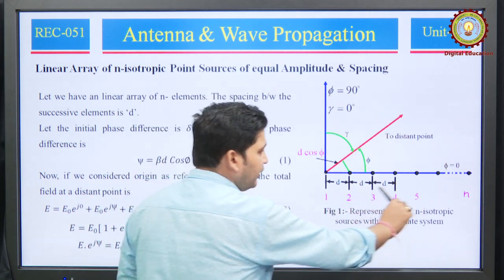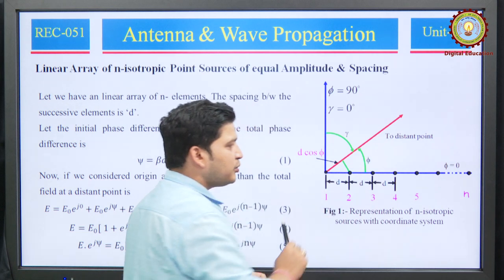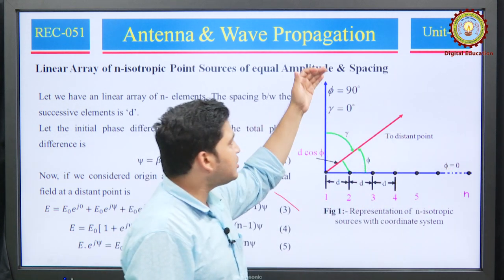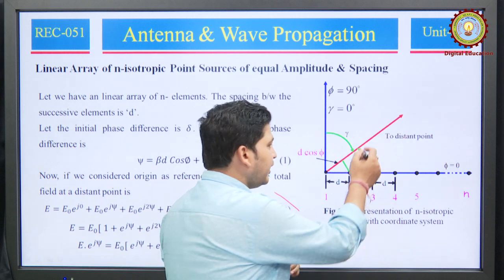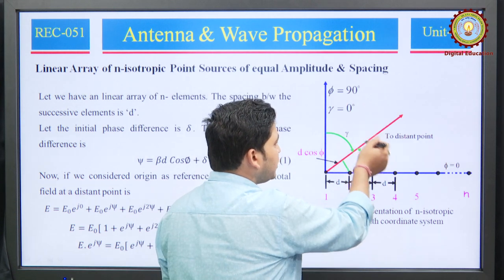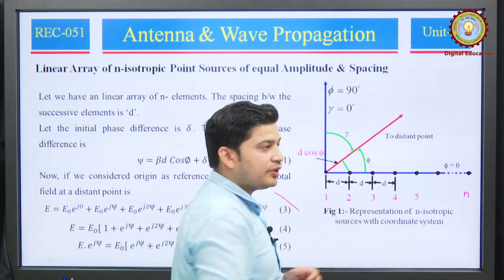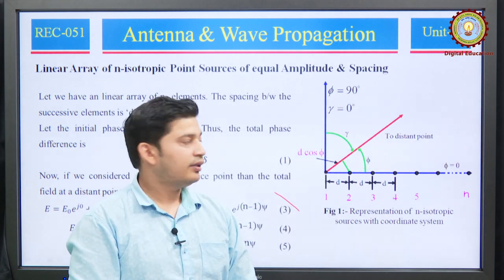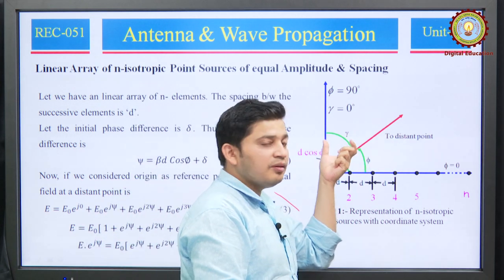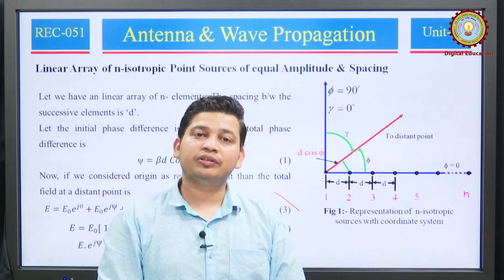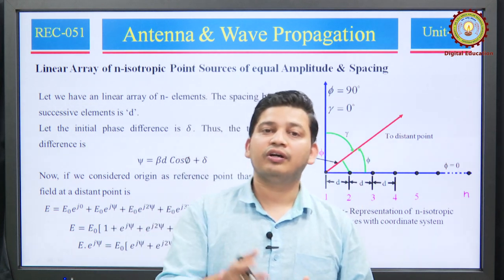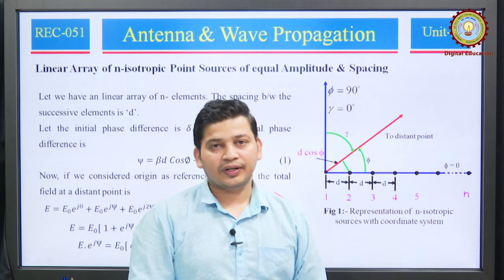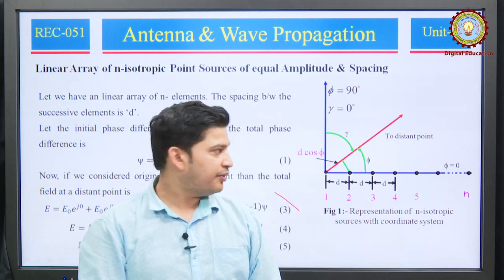In this example, I have considered n point sources, and this is the phi angle: phi=0 and phi=90. This angle is phi, and opposite to that is gamma, which goes from 0 and increases toward this side. This gamma is used to find out the half-power or first-null beam width of the total radiation pattern. We will visualize this later.